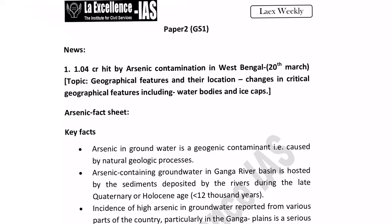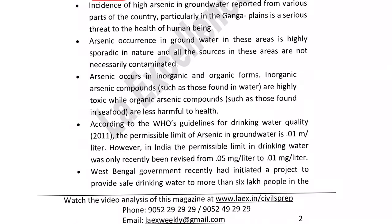I will tell you specific points about arsenic which can be asked in prelims where you get confused. First, arsenic in groundwater is a geogenic contaminant — it is associated with natural processes itself. Arsenic-containing groundwater in the Ganga river basin is hosted by sediments deposited by rivers over a long period. A question may ask that arsenic is majorly an industrial effluent and not produced by natural processes at all — be careful, as UPSC knows how to confuse students on this point.